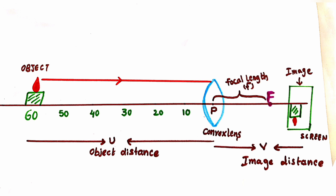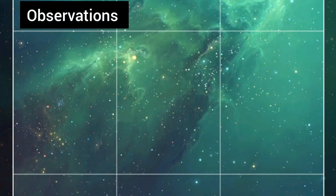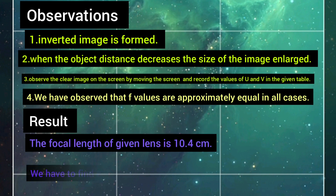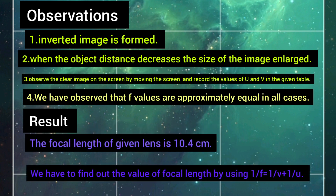The distance between the focus and the optic center is called focal length, denoted by small f. Measure the distance of the image from the V-stand of the lens and the distance between the candle and stand of the lens. The observations in this lab activity are: an inverted image is formed, and when the object distance decreases, the size of the image enlarges. We observed that f values are approximately equal in all cases. The result of this lab activity is that the focal length of the given lens is 10.4 cm, found using the formula 1 by F equals 1 by V plus 1 by U.